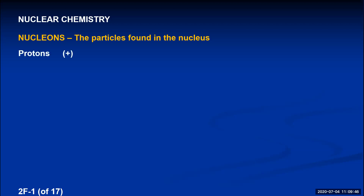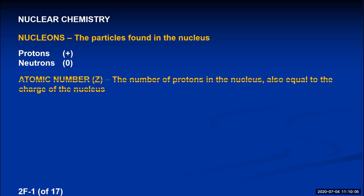The protons are the positive particles found in the nucleus, and the neutrons — from the word neutral — are the particles that have no charge. For an atom of a particular element, the most important property is how many protons are in its nucleus, because that determines what the element is. The number of protons in the nucleus is called its atomic number, and each element on the periodic table has an atomic number associated with it.